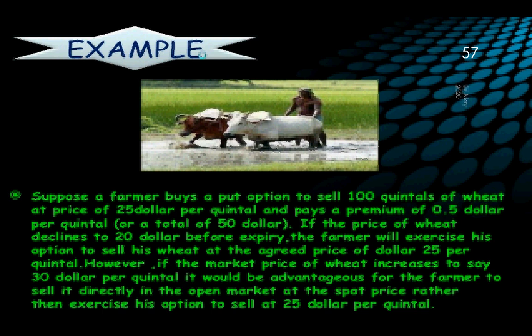Sorry for the interruption. To summarize: when the price reduces, the farmer will exercise his option; when the price increases, he will lapse his option and sell the commodities in the open market.